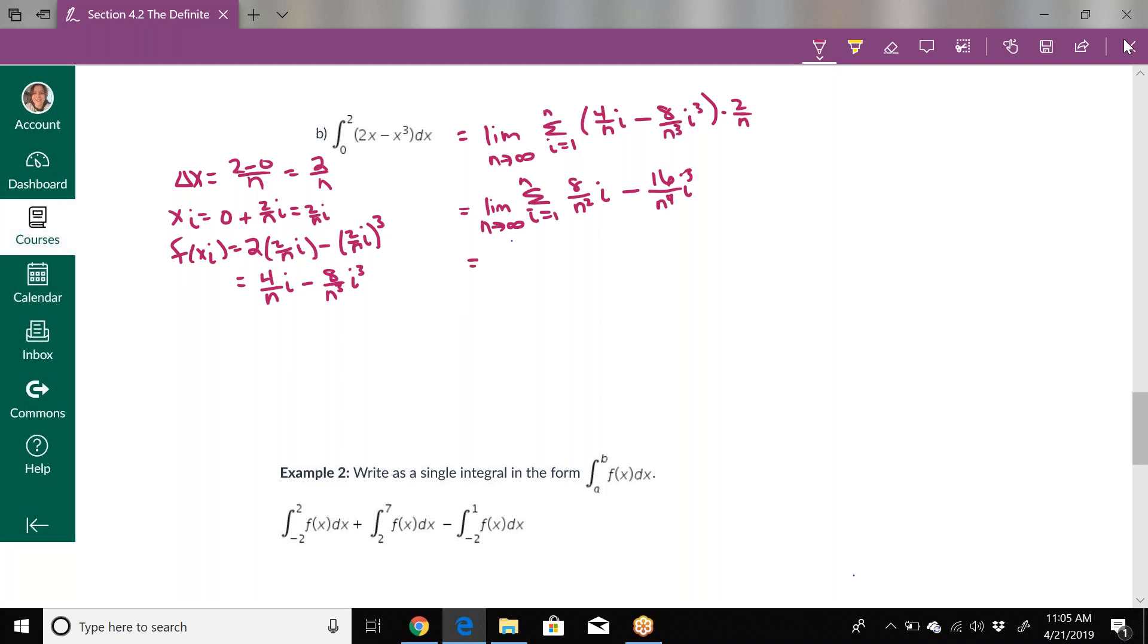If I split my summations up, I can pull out the constants, which is anything with 8, 16, n's - anything that's a constant value. The i's are what's changing throughout the summation. So this is 8 over n squared sum from i equals 1 to n of i, minus 16 over n to the 4th summation from i equals 1 to n of i to the 3rd.